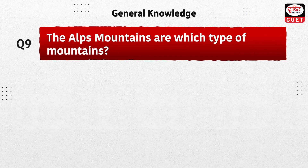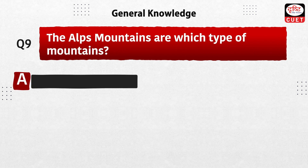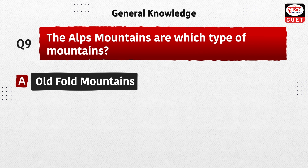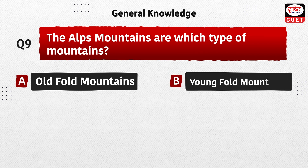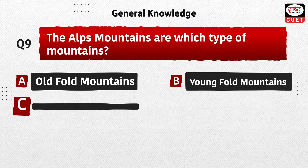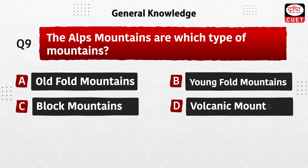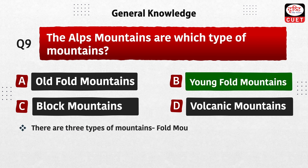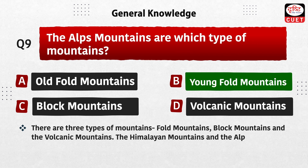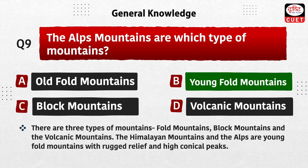Next question: the Alps mountains are which type of mountains — old fold mountains, young fold mountains, block mountains, or volcanic mountains? The correct answer is option B, young fold mountains. There are three types of mountains: fold mountains, block mountains, and volcanic mountains. The Himalayan mountains and the Alps are young fold mountains with rugged relief and high conical peaks.